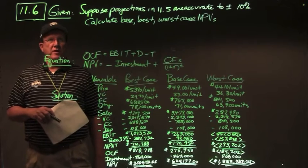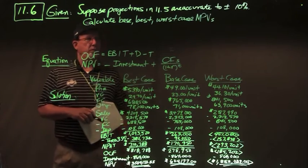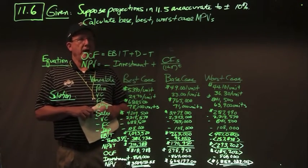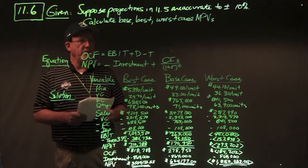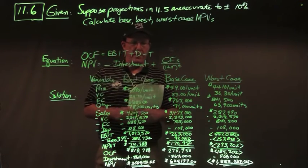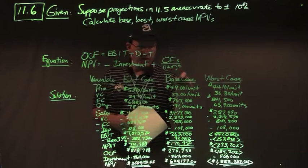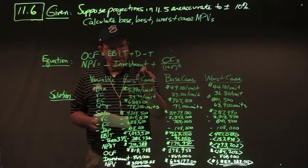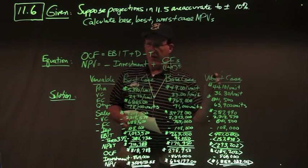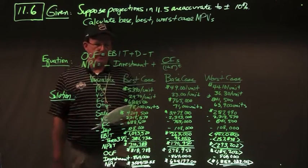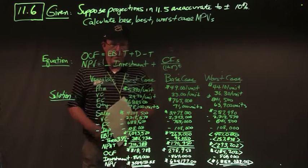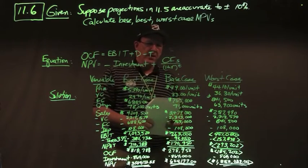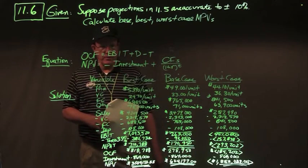In problem 11.6, the projections in problem 11.5 are accurate to plus or minus 10%. We calculate base case, best case, and worst case NPVs using scenario analysis. We use the same base case numbers from 11.5, build best and worst cases, compute OCF as EBIT plus D minus taxes, and NPV as negative initial investment plus discounted cash inflows.